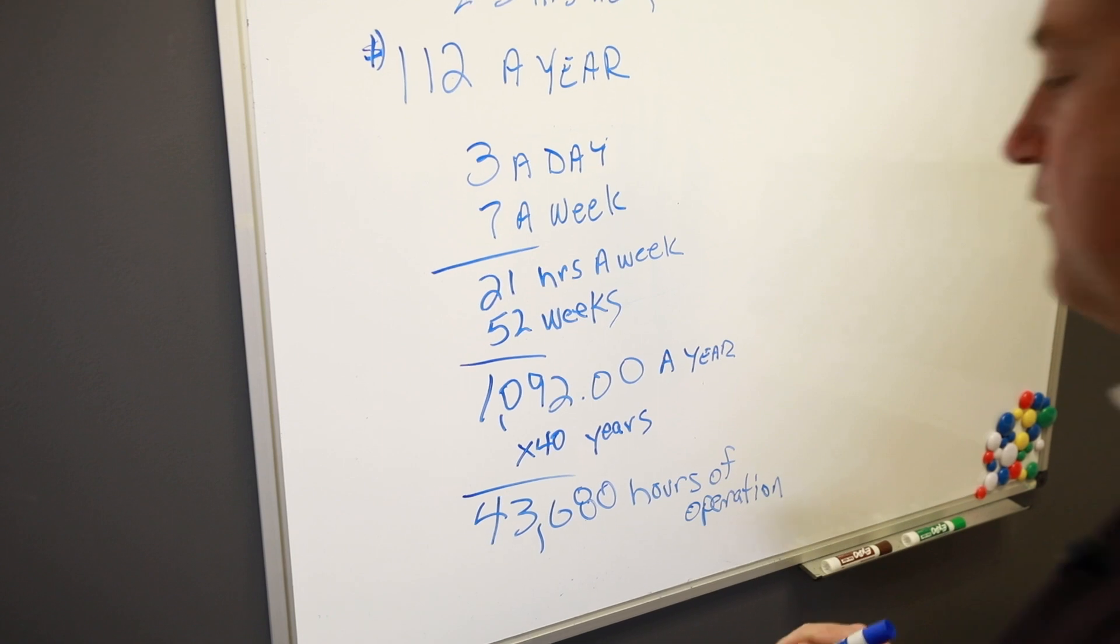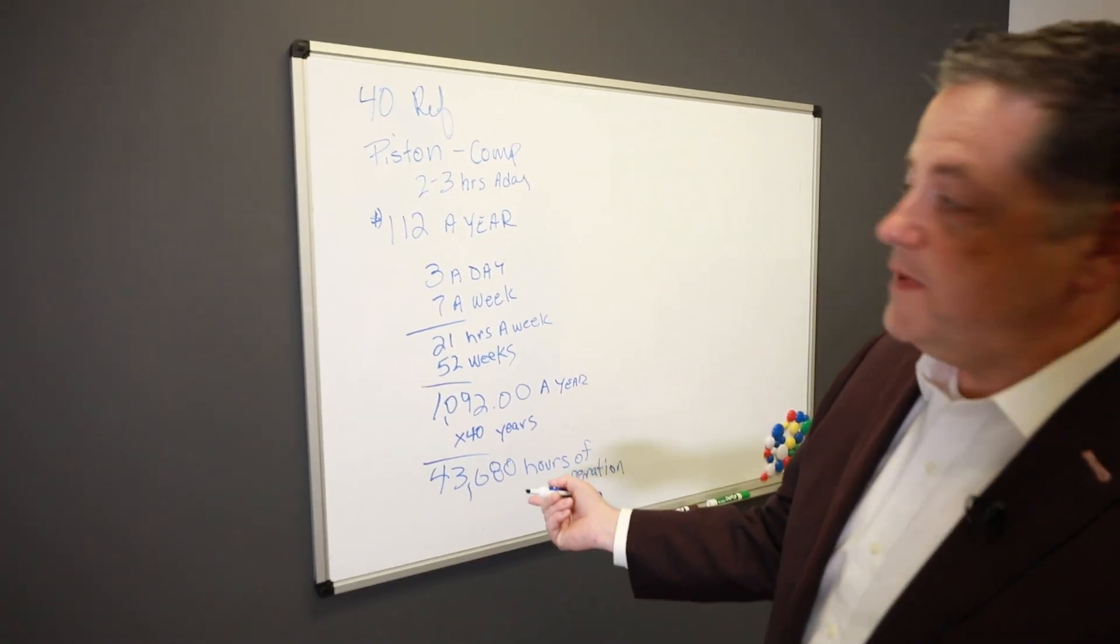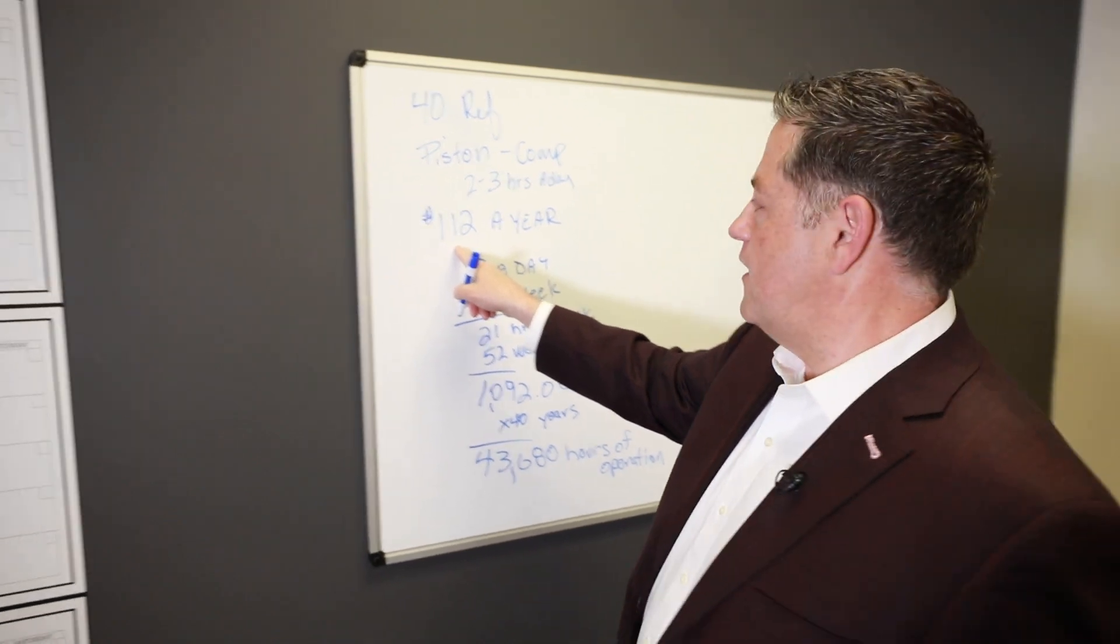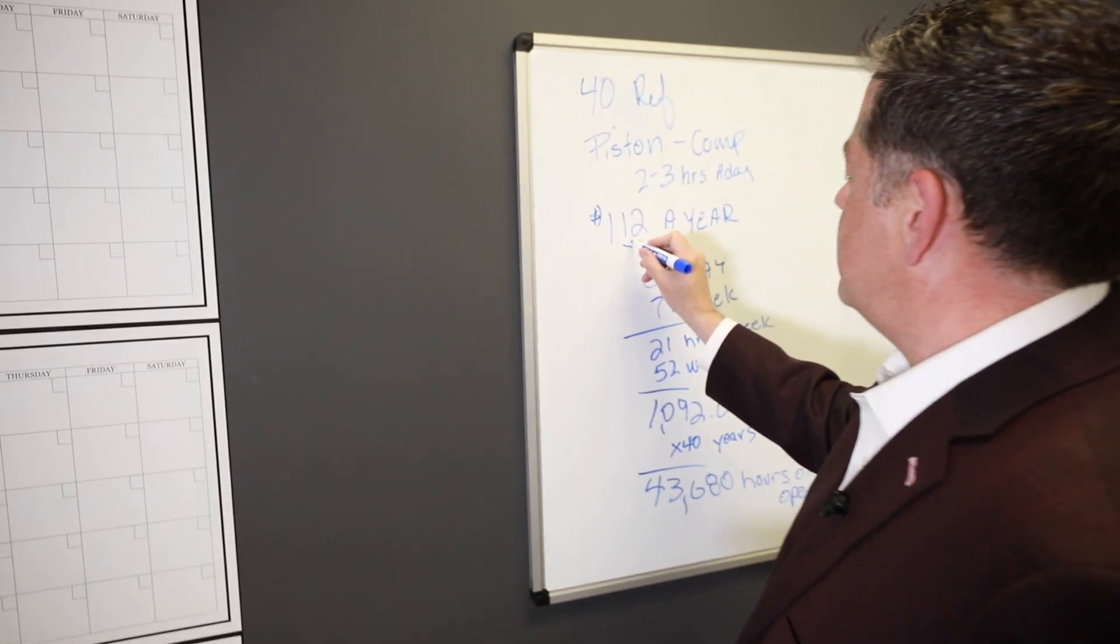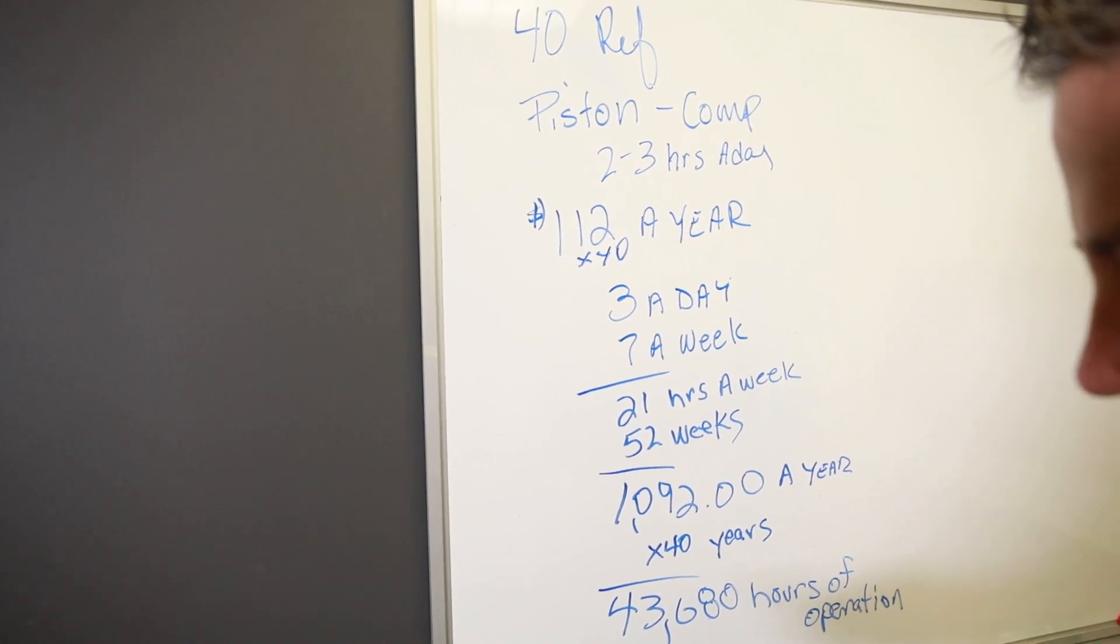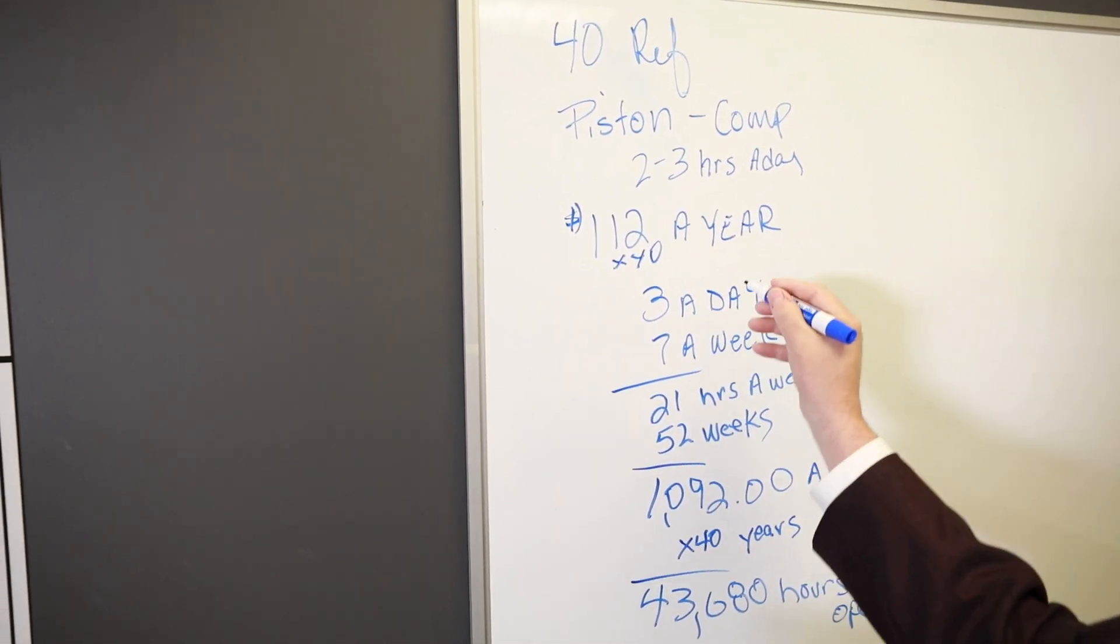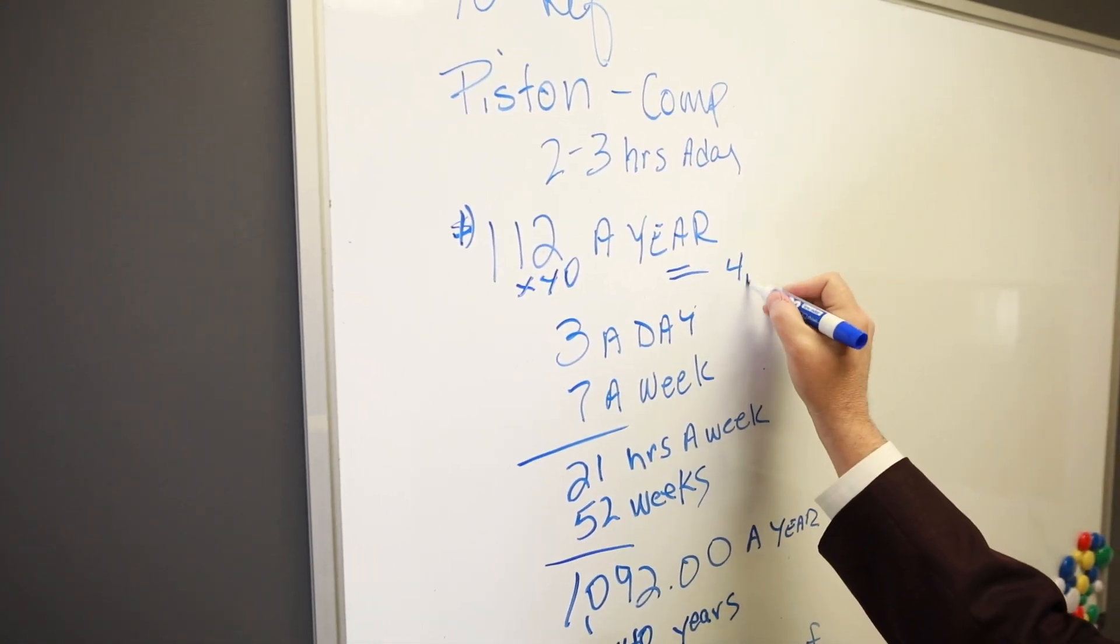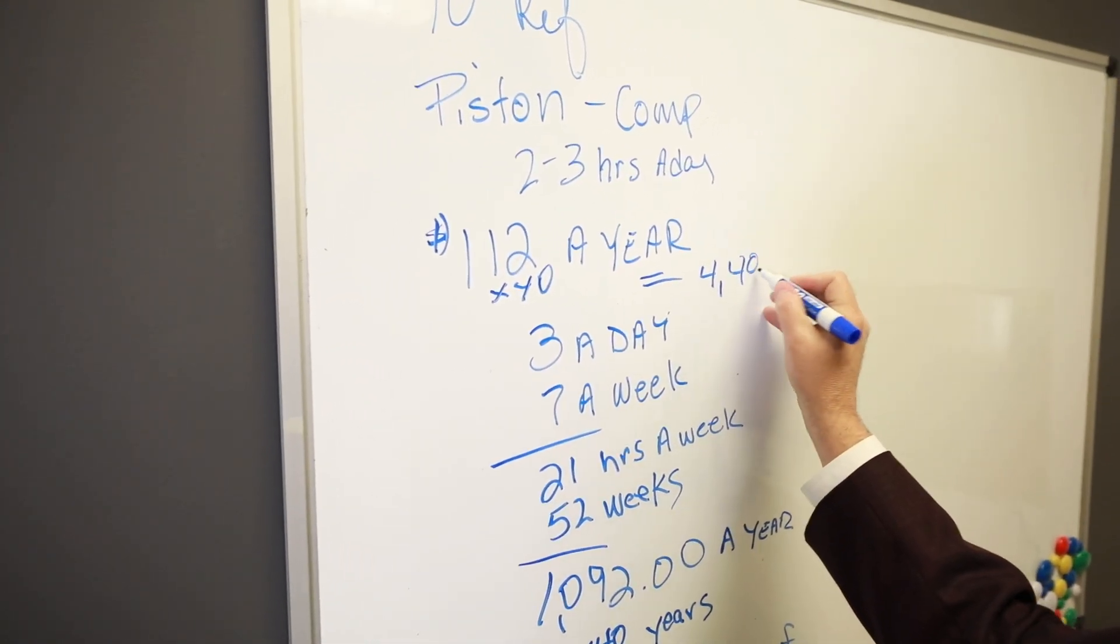Again, apologize for the handwriting. So that's quite a bit of time. Now, let's go back up to this number, the $112 a year. Let's multiply that by 40. So this refrigerator cost you $4,480.